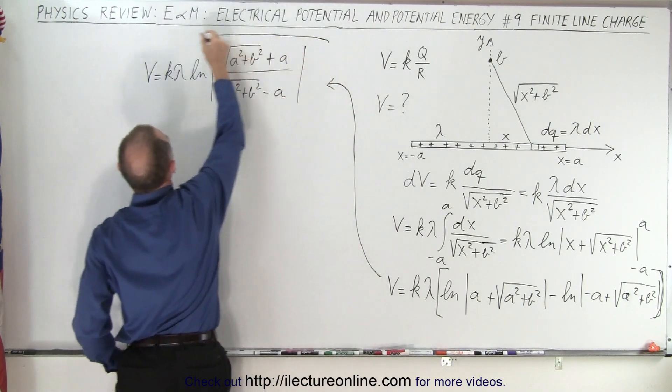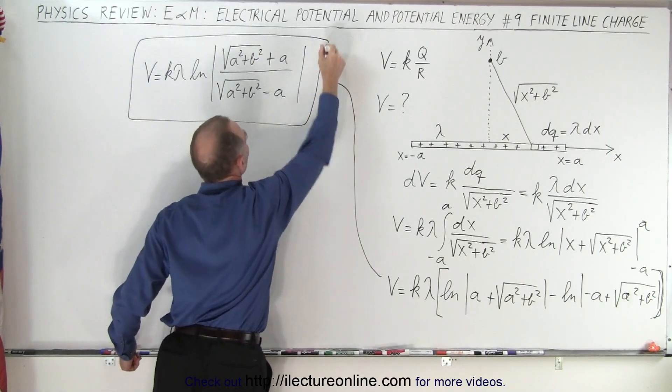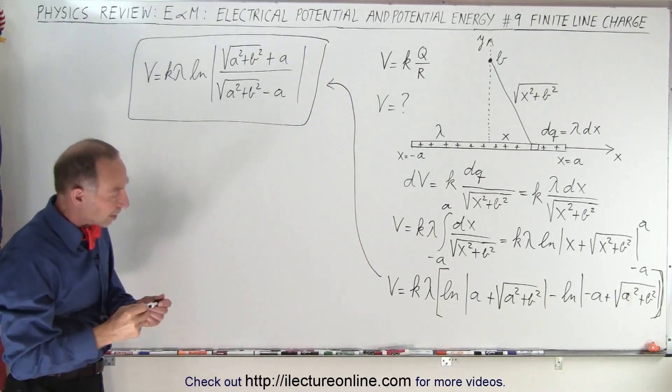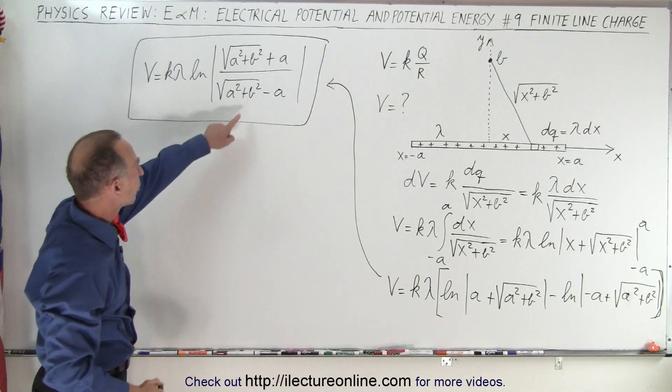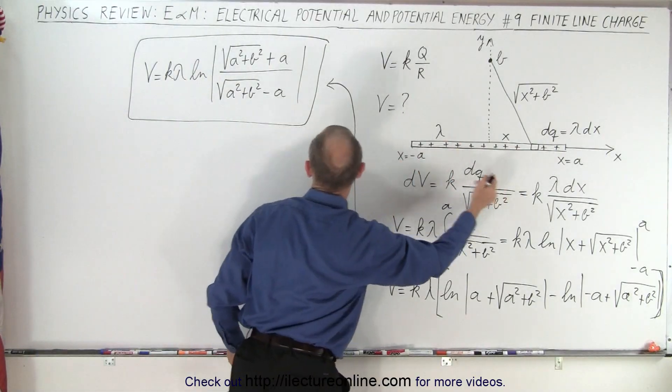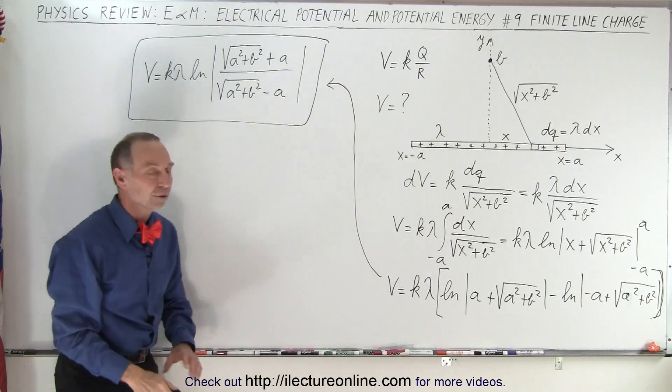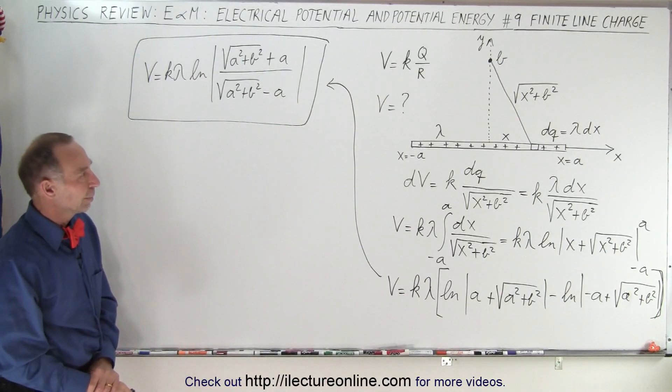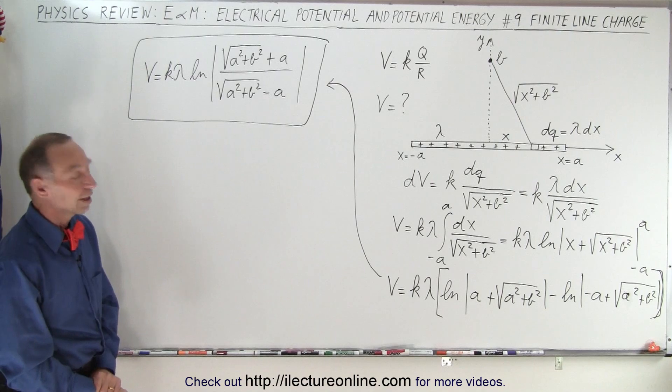There we go. And this then will become the voltage near a line charge when you're a distance b away from it and the length of the line charge goes from minus a to plus a. And so this is how we find the voltage of a finite piece that has charge on it. That's how it's done.